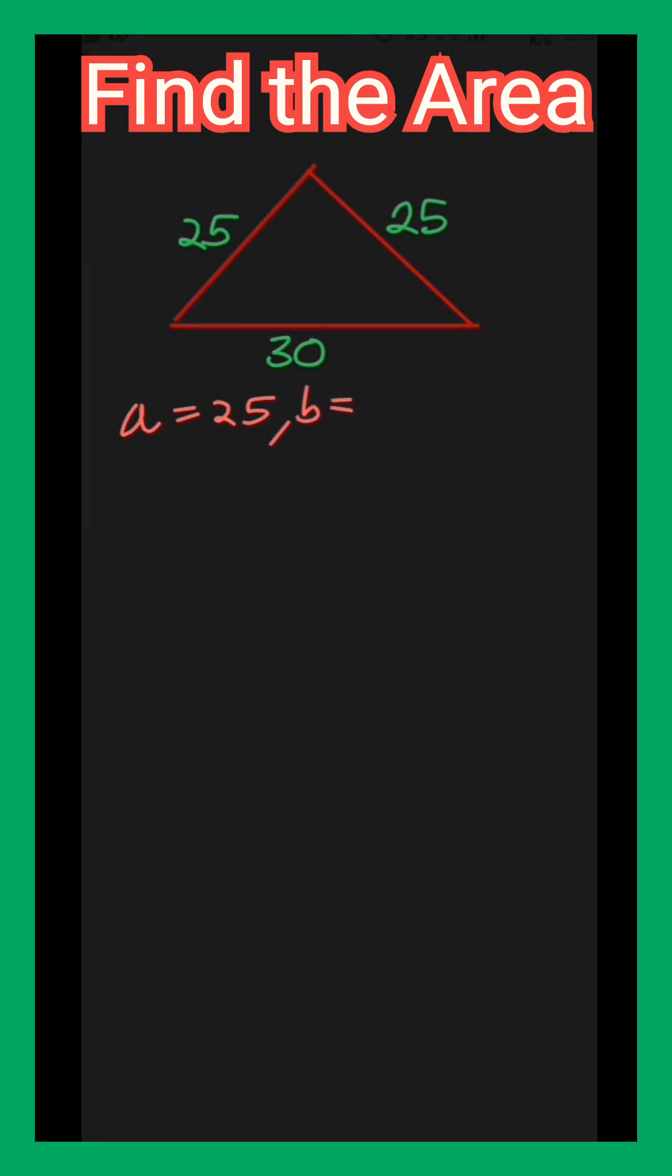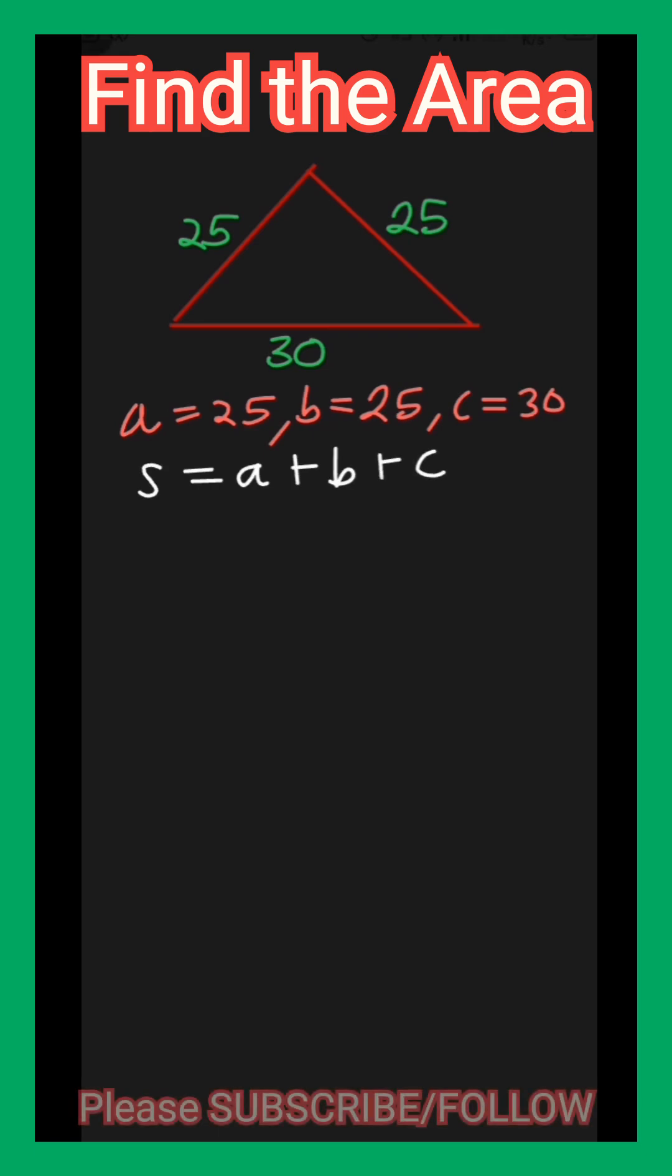So we list out the sides A, B, and C, as given in the triangle. Then we find the semi-perimeter, that is A plus B plus C over 2. So for this triangle, it is the sum of 25,